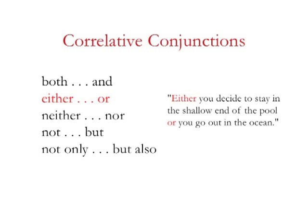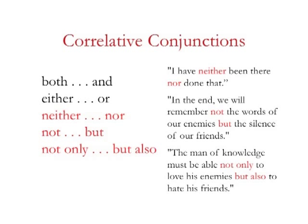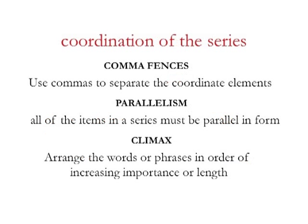You can also use correlative conjunctions to link units smaller than clauses — words or phrases. Bart Simpson once said: 'I have neither been there nor done that,' linking two verb phrases. Martin Luther King Jr. once said: 'In the end, we will remember not the words of our enemies, but the silence of our friends,' linking two noun phrases. Friedrich Nietzsche once said: 'The man of knowledge must be able not only to love his enemies, but also hate his friends.' Who knows what that means, but it sounds good.